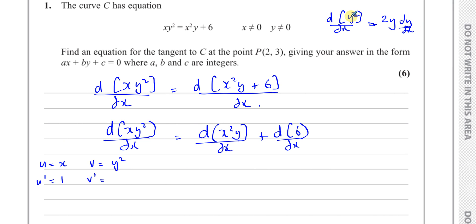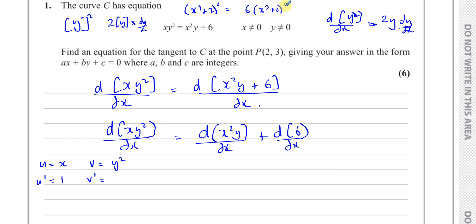So when you differentiate a Y term, you differentiate it as if it's normal, but if it's a Y term, you must write dy/dx at the end of it — multiplied by dy/dx. That's the key point to understand. Using the product rule — V dash times U plus U dash times V — I have Y squared times 1 plus X times 2Y dy/dx, which gives Y squared plus 2XY dy/dx. That's the differential of the left-hand side. Similarly on the right-hand side, with U equals X squared and V equals Y, U dash is 2X and V dash is dy/dx. So multiplying out gives 2XY plus X squared dy/dx.